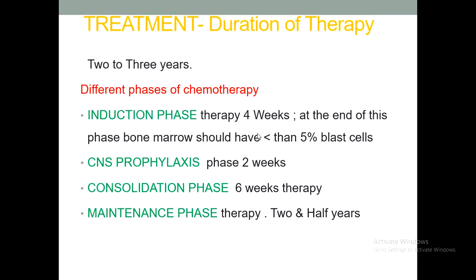Consolidation therapy uses vincristine, cytosine arabinoside, and daunomycin for six weeks to reinforce the induction and CNS prophylaxis. Finally, the maintenance phase uses mild to moderate chemotherapy — vincristine, prednisolone, methotrexate, and cytosine arabinoside — spanning two to two and a half years. At the end of maintenance therapy, the patient can be considered cleared of acute lymphoblastic leukemia. Total duration of therapy is two to three years depending on risk stratification.